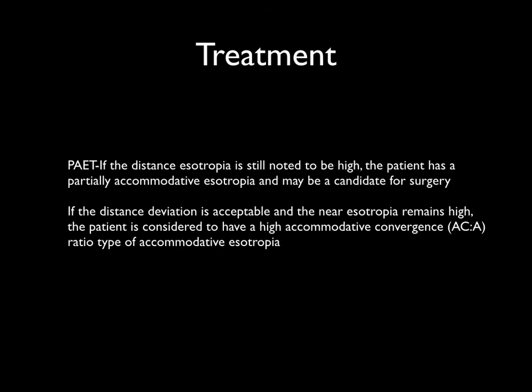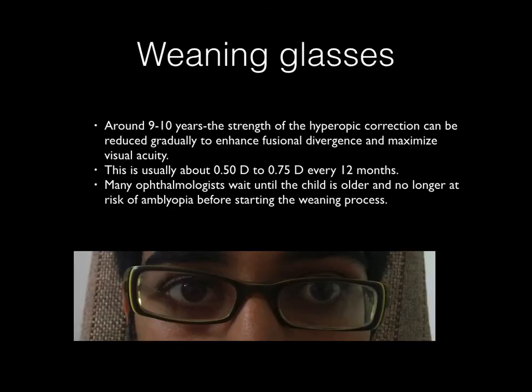Usually, as these children with refractive accommodative esotropia reach about 9 to 10 years old, we can try reducing the plus power by 0.5 diopters per year. Some doctors suggest waiting until around 12 years, until they have crossed the amblyopiogenic age, and then start weaning.